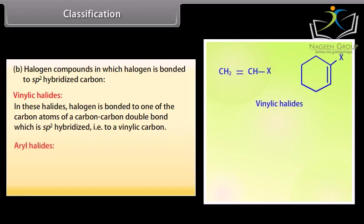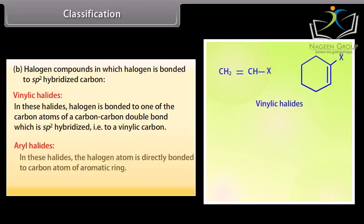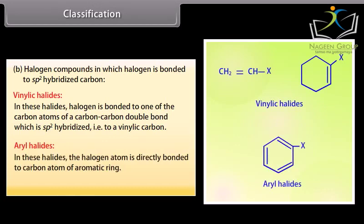Aryl halides: In these halides, the halogen atom is directly bonded to a carbon atom of the aromatic ring. For example, halobenzene.